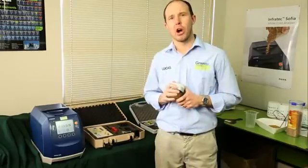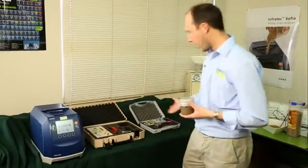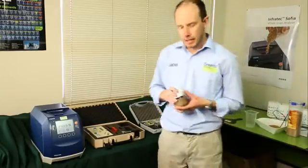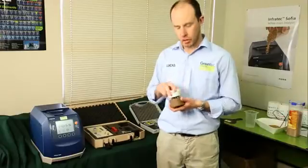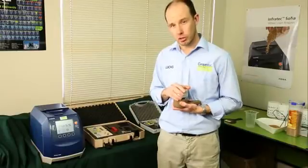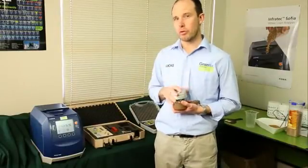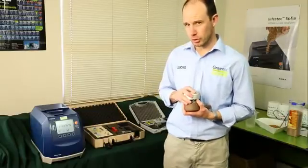If you're getting particularly high moisture readings from a handheld moisture meter like the HE50 or the HE Lite, check that you haven't got any green grains in your sample. Green grains will make your moisture reading artificially high. It's important that you remove all green grains before measuring moisture.